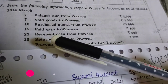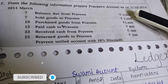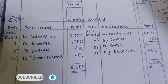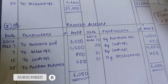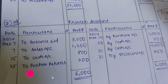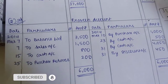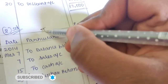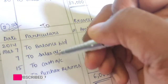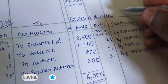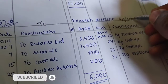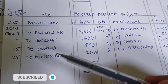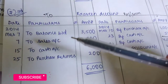The first transaction always gives us a balance — balance due from Praveen 3500. As usual, the first transaction always gives us the opening balance. The shortcut I discussed in my first video: debit side — always if you see 'to', write the name first then go to debit side. For credit side, if you see 'by' or 'from' before the name, go to credit side.